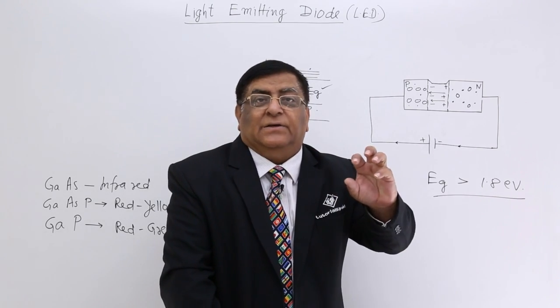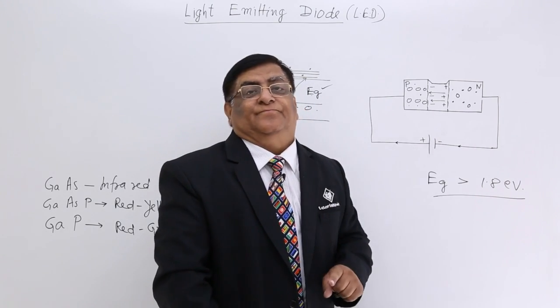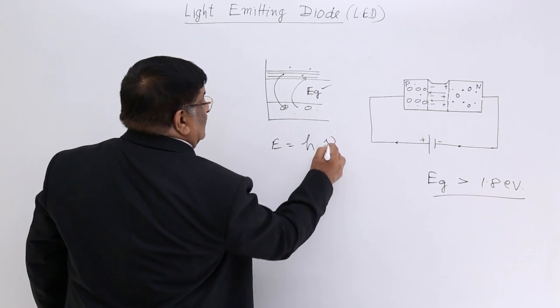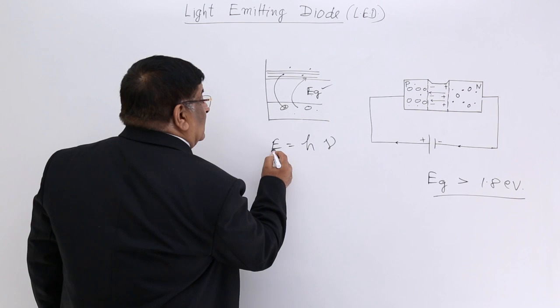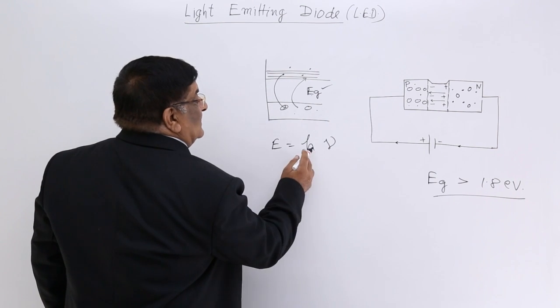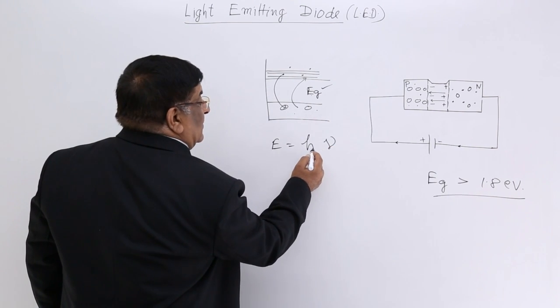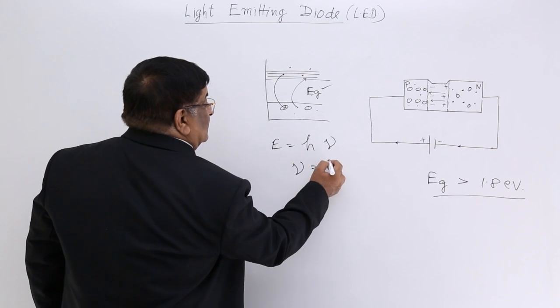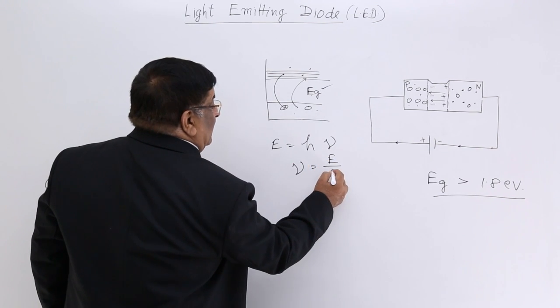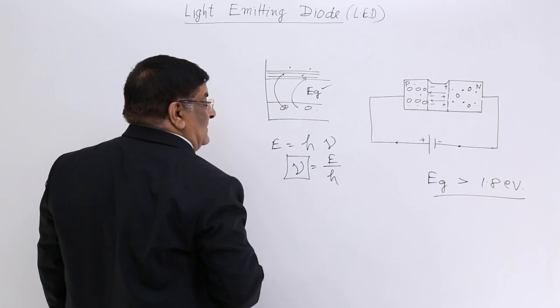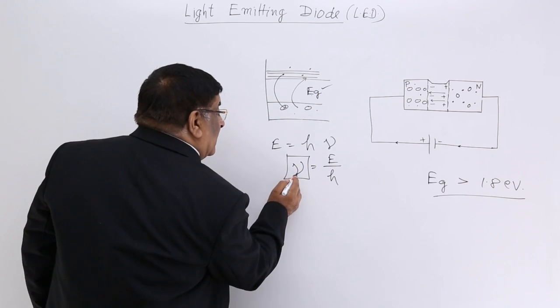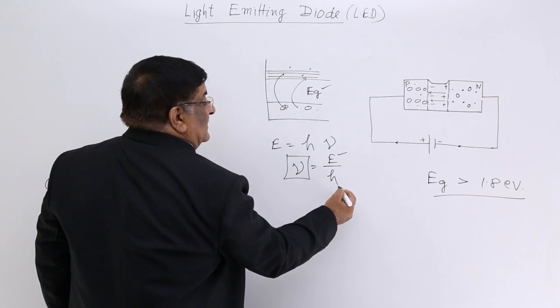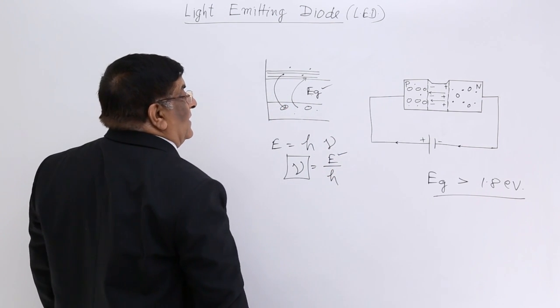Now for a light, we need a photon. Energy of the photon is given by H nu, where H is Planck's constant. So frequency of the photon nu is energy divided by H. This gives the frequency. Now this frequency will be less or more depending upon energy, because this is a constant.